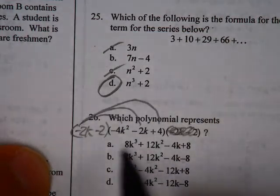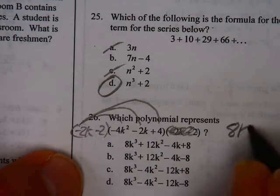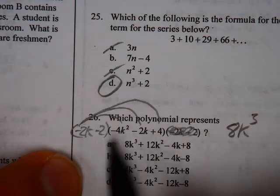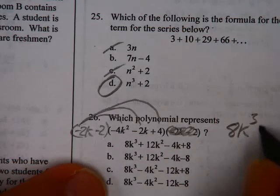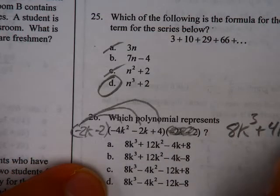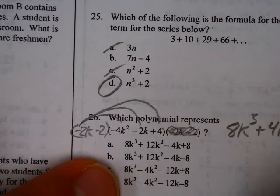Negative 2k and negative 4k squared is 8k to the third power, positive because the negative times the negative. Negative 2k, negative 2k, positive 4k squared. Negative 2k, positive 4, that's a minus 8k.